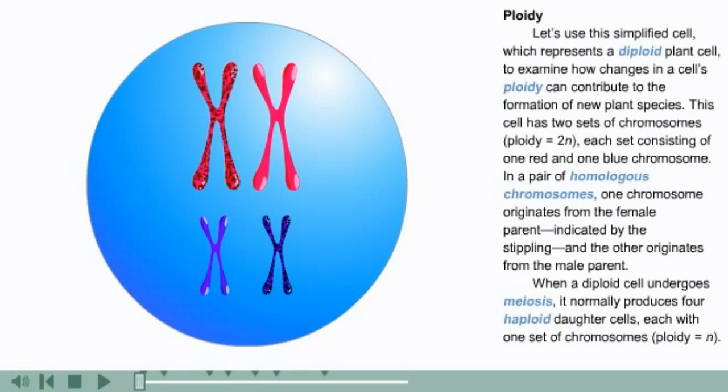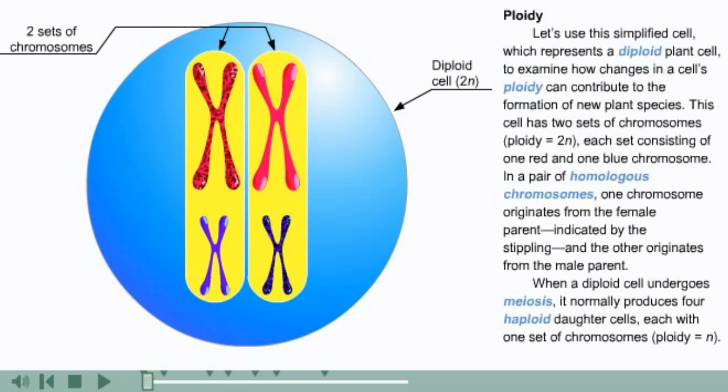Let's use this simplified cell, which represents a diploid plant cell, to examine how changes in a cell's ploidy can contribute to the formation of new plant species. This cell has two sets of chromosomes, or a ploidy equaling 2n.